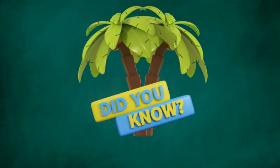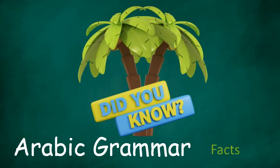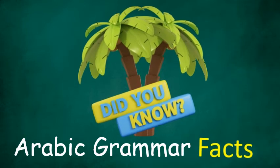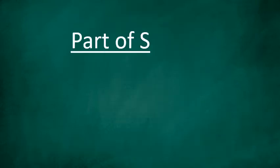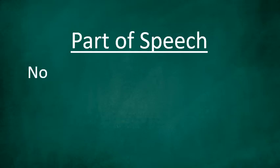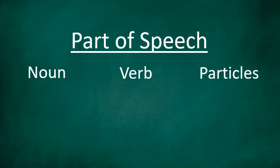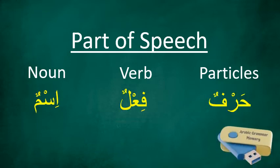Did you know? Unlike English, Arabic has only three parts of speech: noun, verb, and particles. In Arabic you call it ismun, wa feilun, wa harfun. Memorizing this will help you a lot in understanding sentences in Arabic.